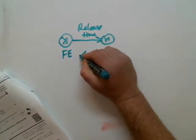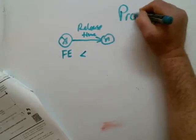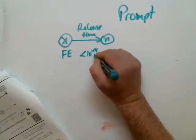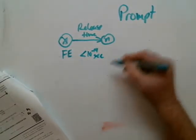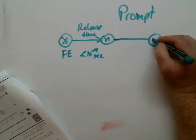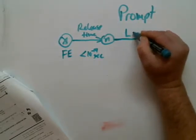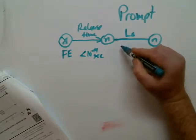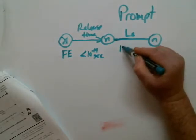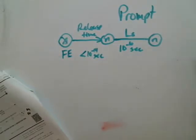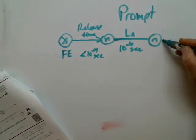And we know for a prompt neutron, this is prompt, that that was less than 10 to the minus 14th seconds. Then we know that the neutron is going to start slowing down. It's going to lower energy level. We call this the slowing down length. And the time associated with it is the slowing down time. And on average, it's about 10 to the minus 6th seconds. And then it's going to continue on until it gets absorbed.